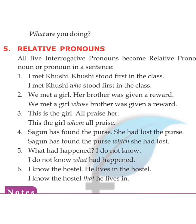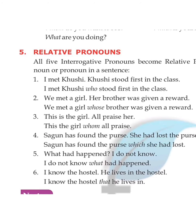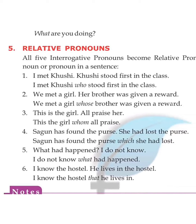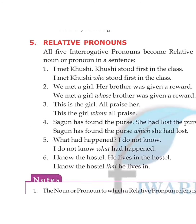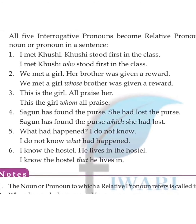All five interrogative pronouns can become relative pronouns when used within a sentence. For example: 'I met Khushi. Khushi stood first in the class.' — combined using a relative pronoun: 'I met Khushi who stood first in the class.' Another example: 'We met a girl. Her brother was given a reward.' — 'We met a girl whose brother was given a reward.'